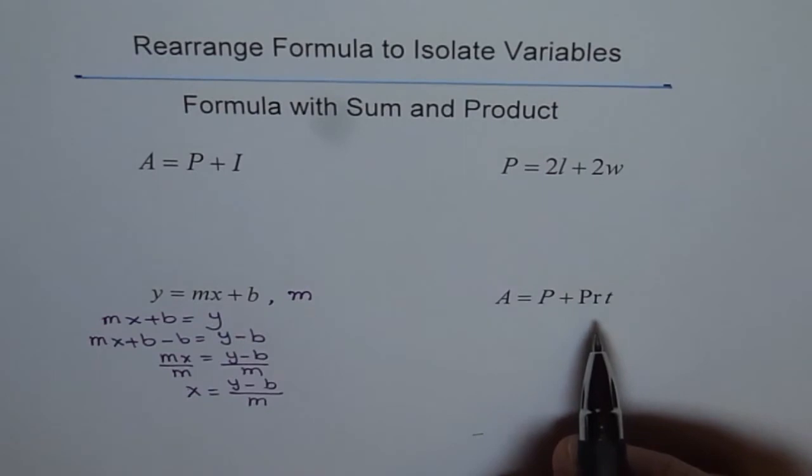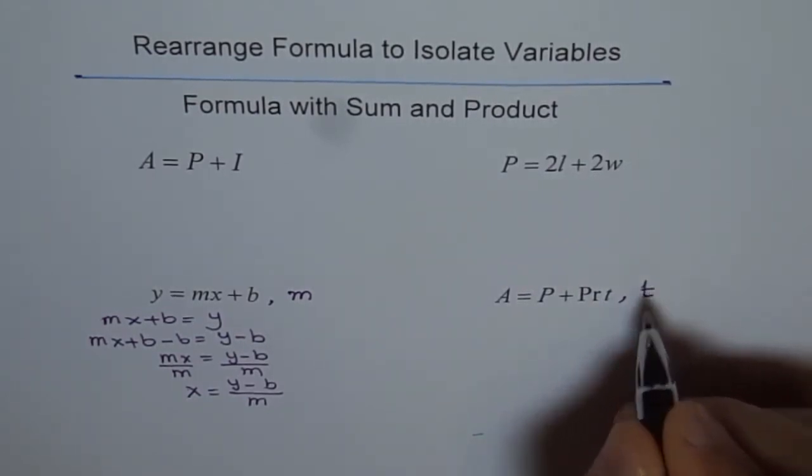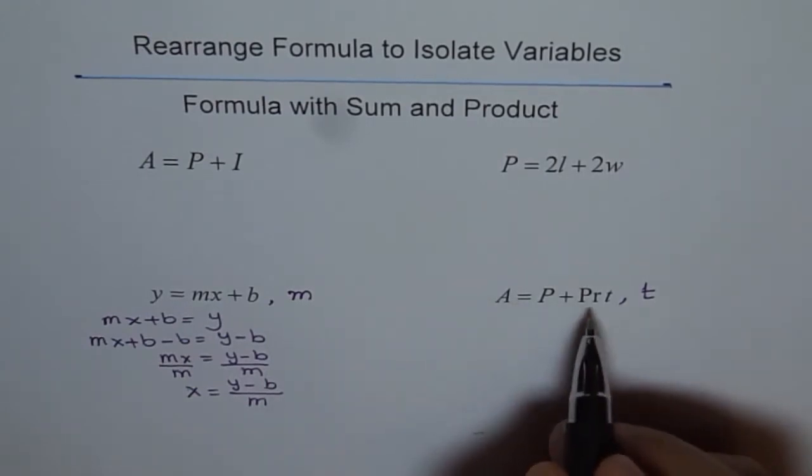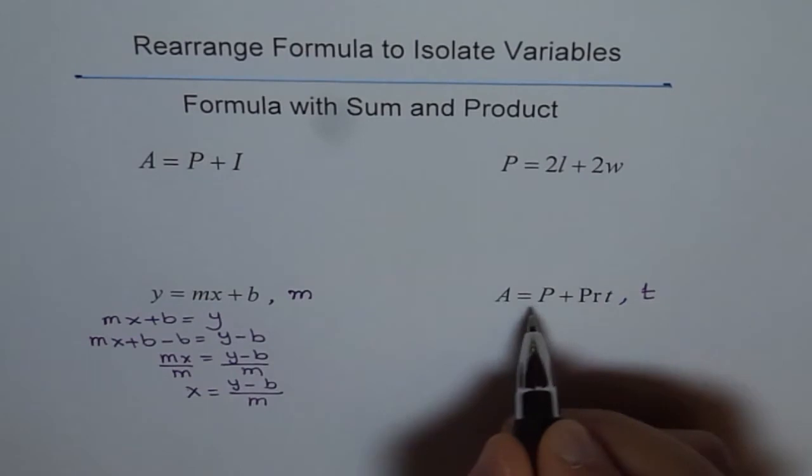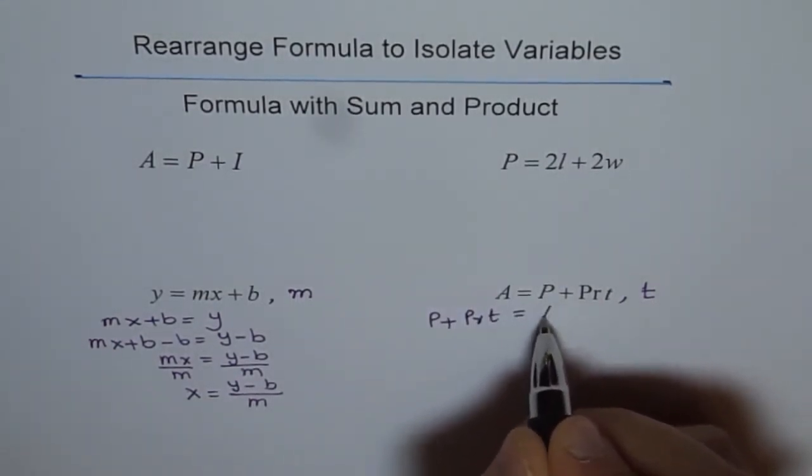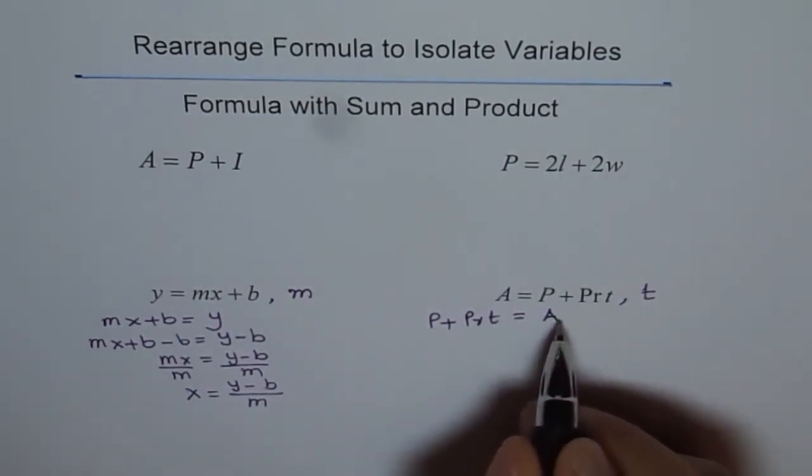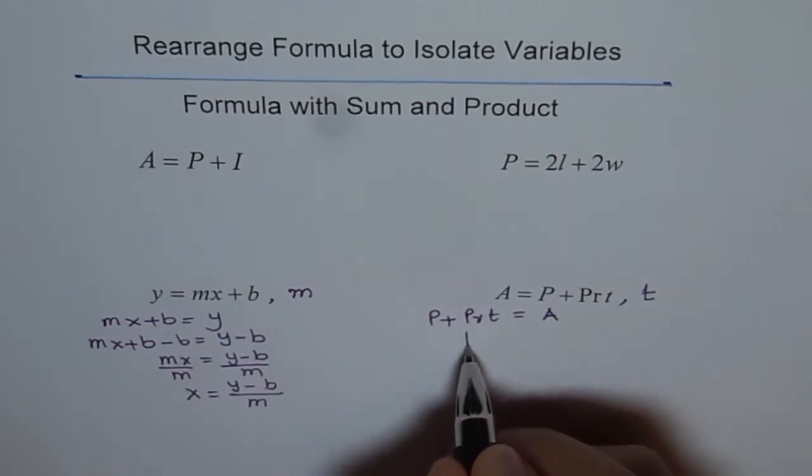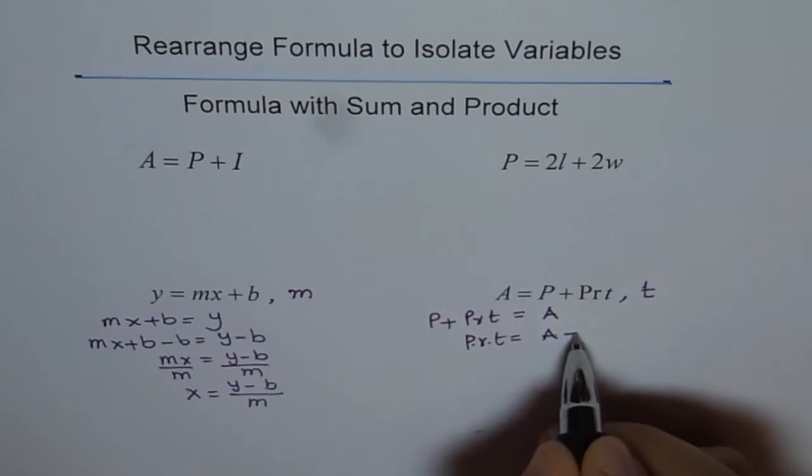Let's do this one now. Let's isolate for T. It is very similar to what we did here. So, I will do shorter steps here. Let me write this as P plus PRT equals to A. And what I need is T. So, I will take away P from both sides. If I take away P from both sides, I get P times R times T equals to A minus P.